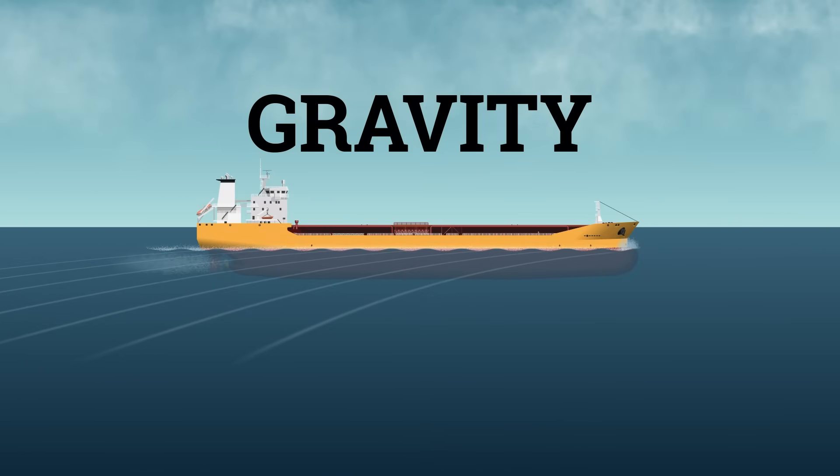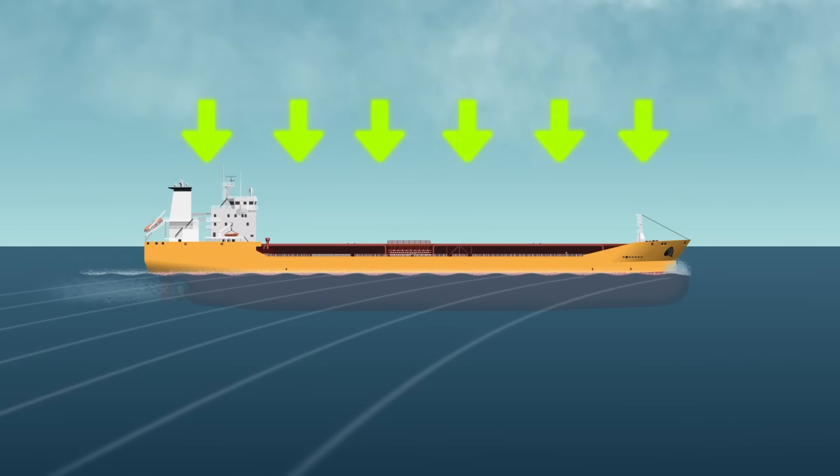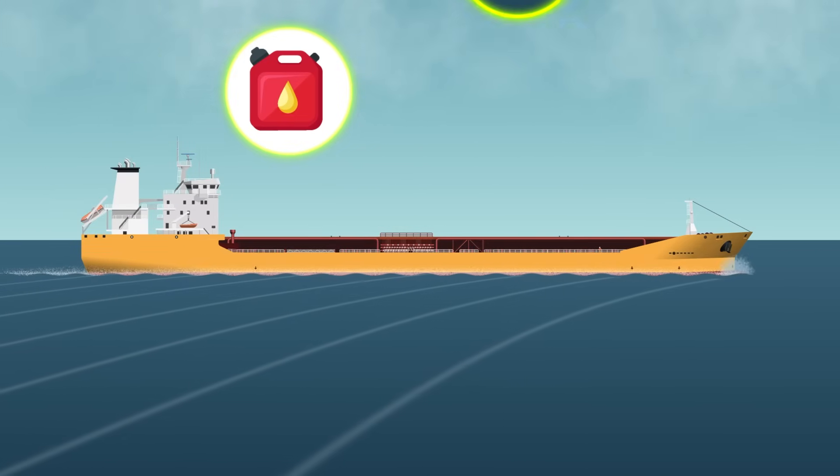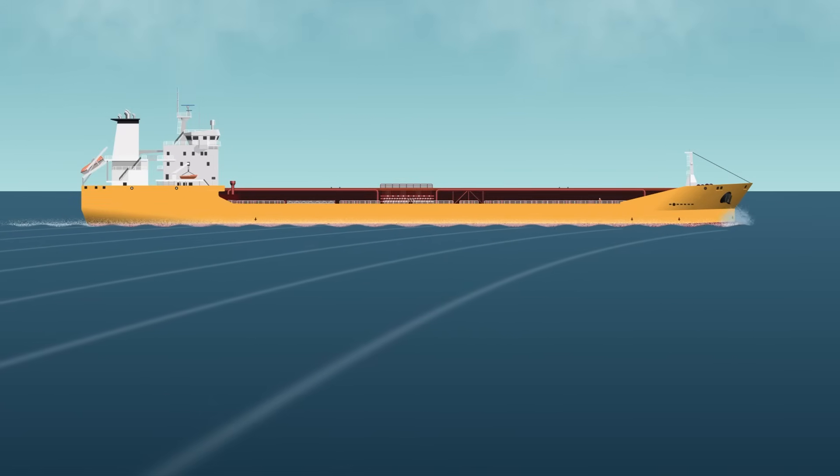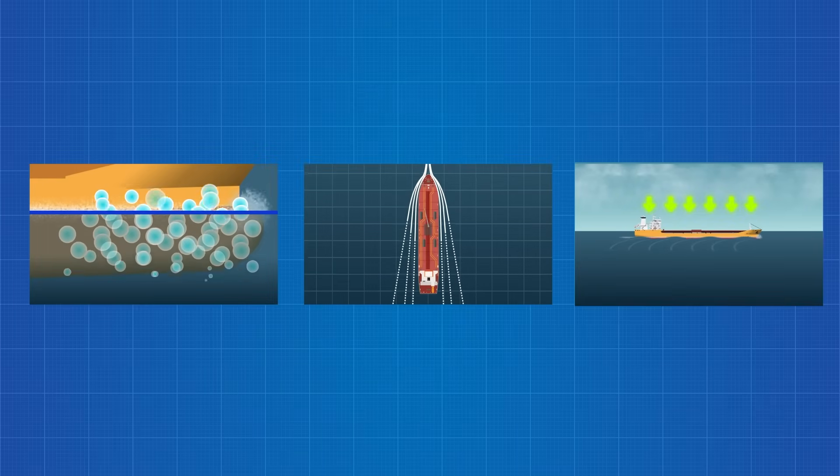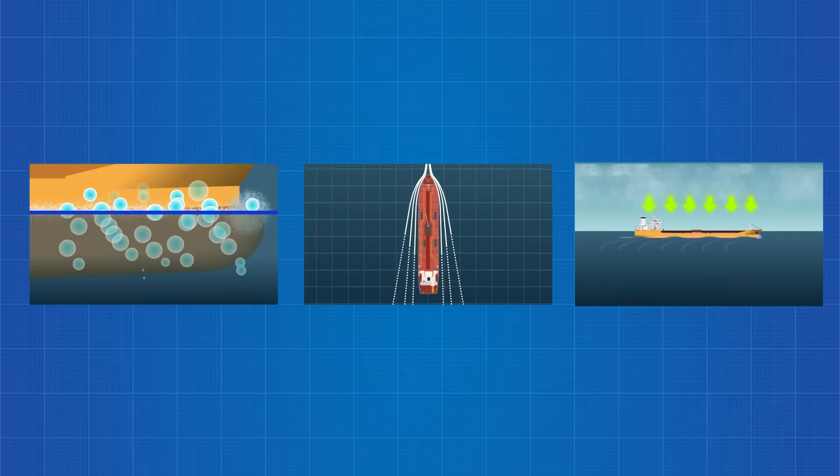And gravity. The force behind every crest and trough governs how the hull meets the sea, shaping fuel consumption, sea-keeping ability, and the experience of everyone on board. Decide which of these dominates, and the rest of the test plan falls into place.